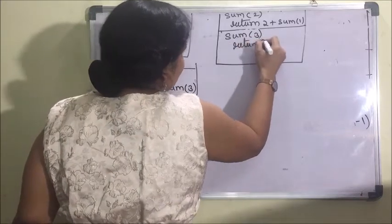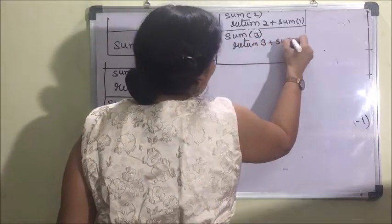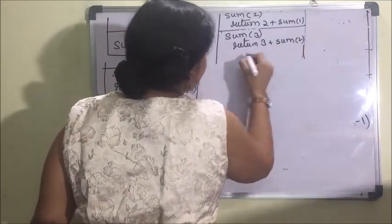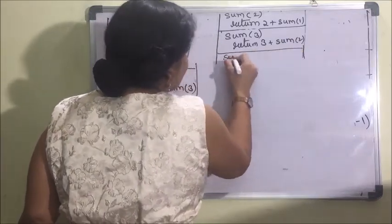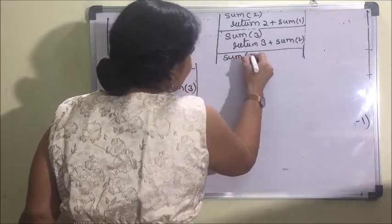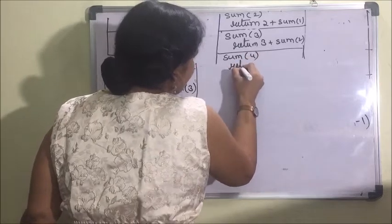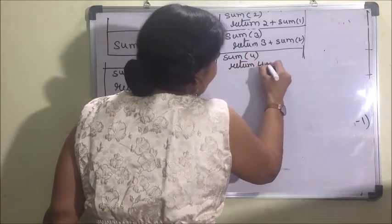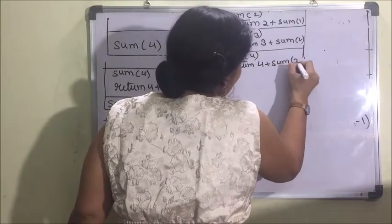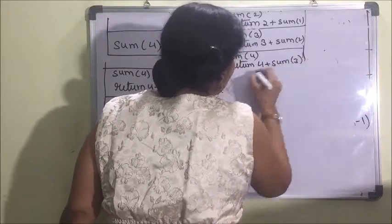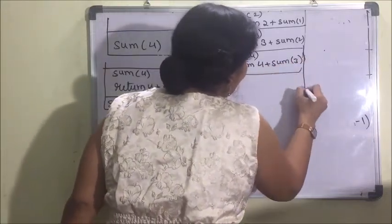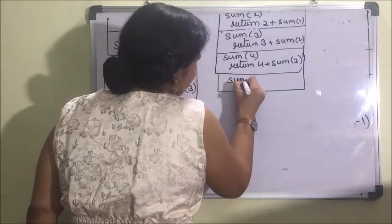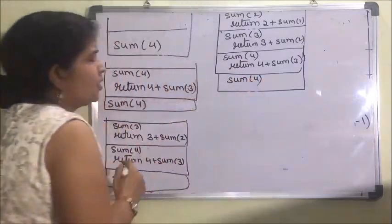Then sum(4) returns 4 plus sum(3) — this is where the function call was made. This is the very first frame. Now again it will make a function call to sum(1).